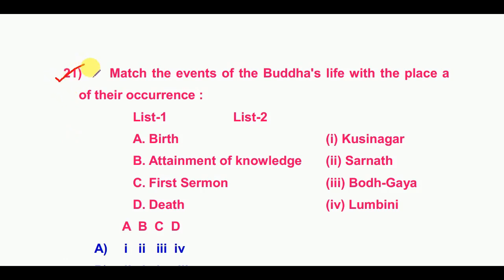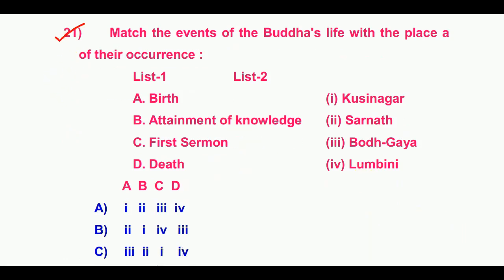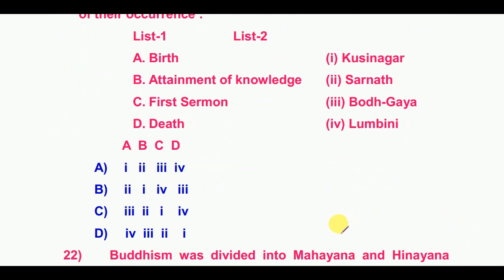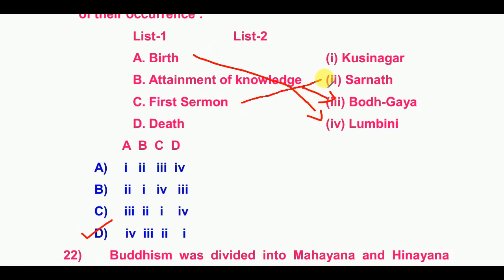Twenty-first question — Match the following. The answer is option D. Birth: Lumbini. Attainment of knowledge: Bodh Gaya. First sermon: Sarnath. Death: Kushinagar.